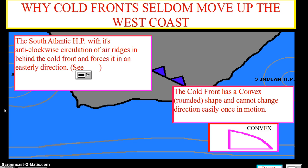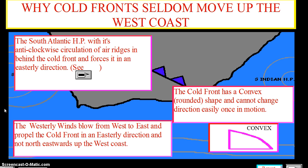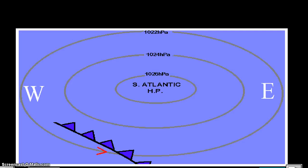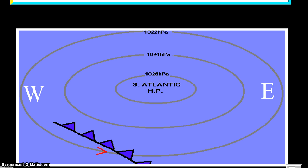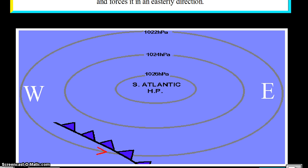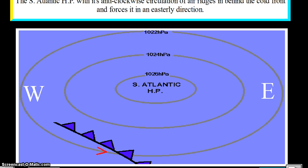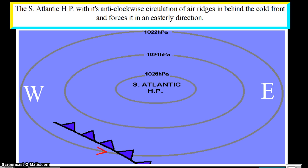The westerly winds blow from west to east and propel the cold front in an easterly direction, not northeastwards up the west coast. The South Atlantic high-pressure cell with its anti-clockwise circulation ridges in behind the cold front and forces it in an easterly direction.